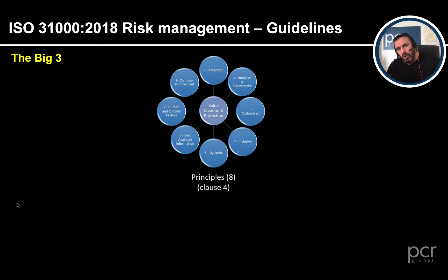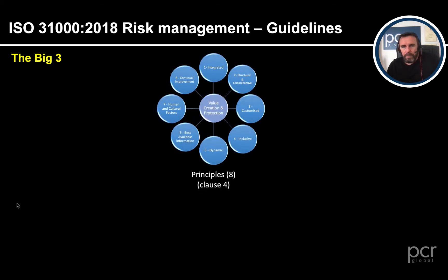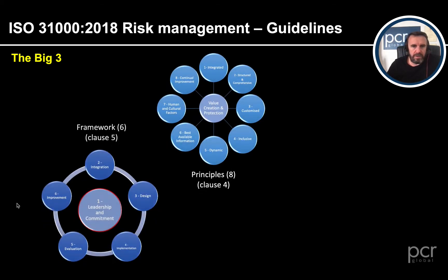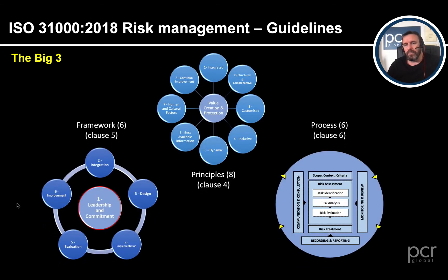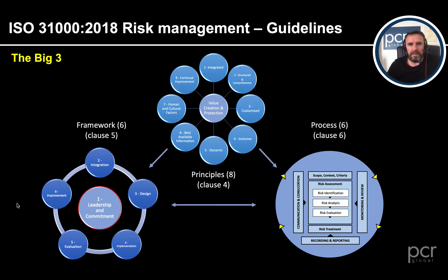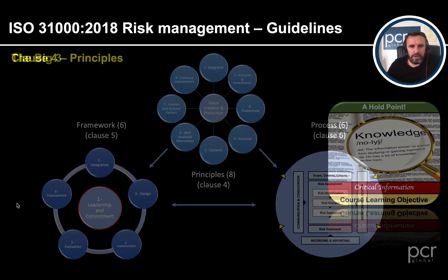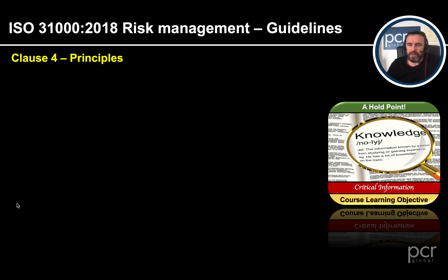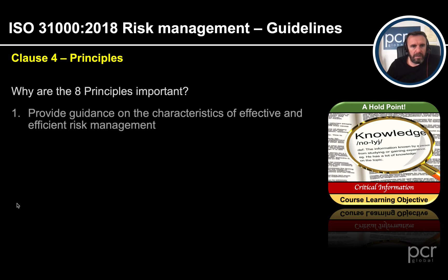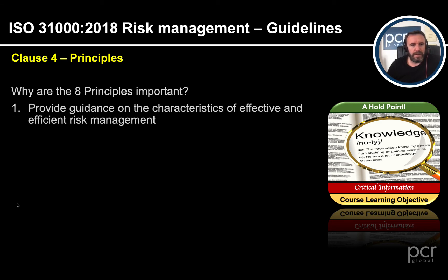The big three — we talk about the big three principles, the framework and the processes. This is the big three of ISO 31000 2018 risk management guidelines. I'm just going to briefly talk about the principles. Whilst I was putting this video together, I thought I'd check it out, and if it helps anybody, then fantastic.